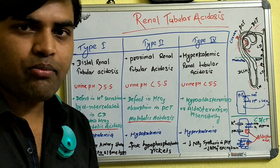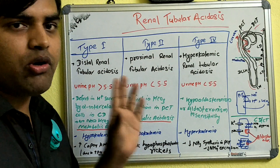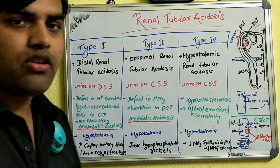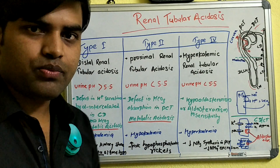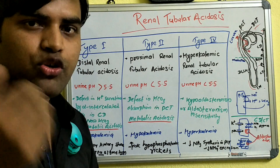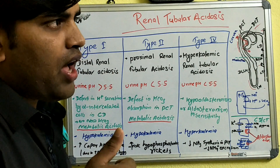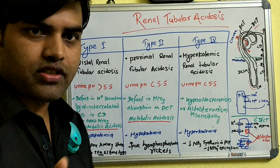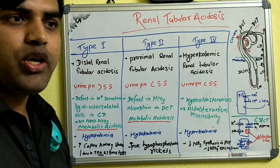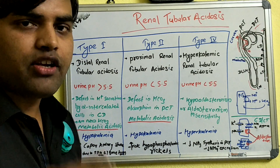Hello everyone. Today we will be discussing an important higher-yield question that will be asked in your exam, and that is renal tubular acidosis. We need to understand this very clearly because it is a high-yield topic, useful not only for your exam but also in daily clinical patient management. Acidosis is normally present when a patient has chronic kidney damage — a CKD patient will have acidosis. But if a patient with previously normal kidney function presents with acidosis, normal anion gap acidosis, and other features, and we think it is due to a renal cause, we term it renal tubular acidosis.